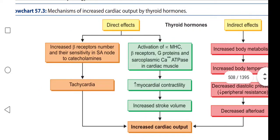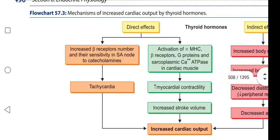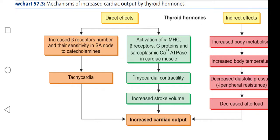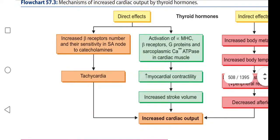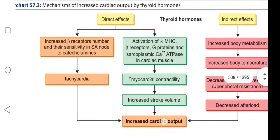As seen in this figure, thyroid hormones increase beta receptors on the sinoatrial node and atrioventricular nodes and also increase the sensitivity of beta receptors to catecholamines. This increases the heartbeat and causes tachycardia, resulting in increased cardiac output.